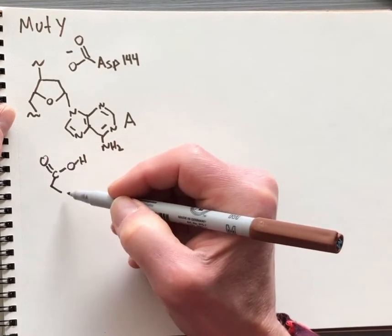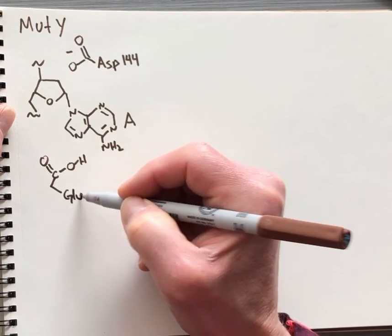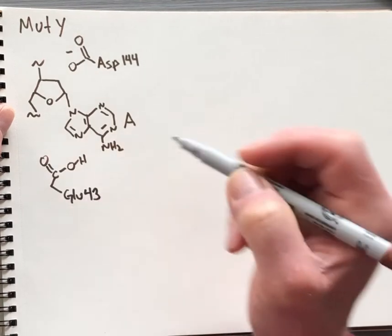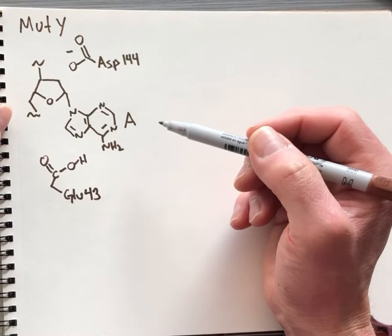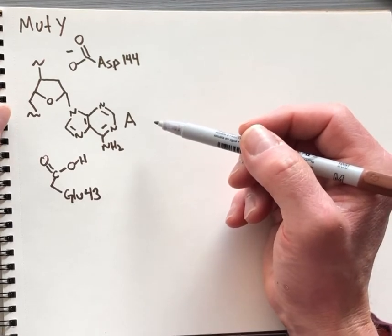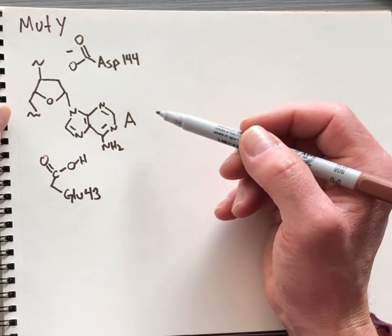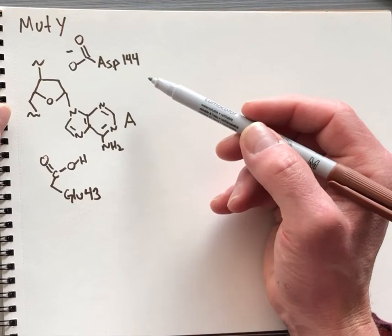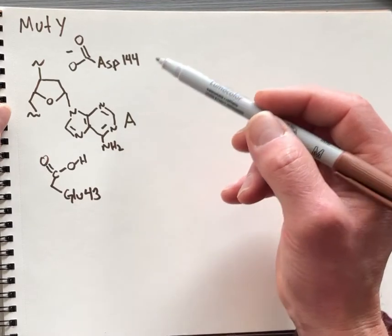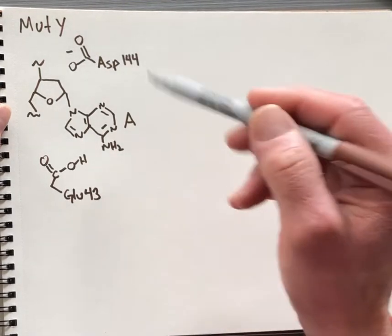This is provided by residue glutamate 43, and these numbers correspond with the enzyme from Geobacillus stearothermophilus. That's the enzyme for which we can determine the crystal structure that actually shows the position of all these atoms in atomic detail.